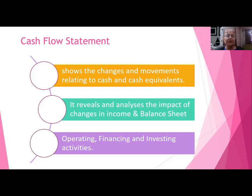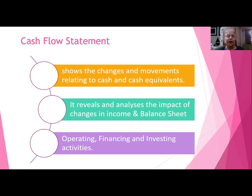There are three activities through which cash can be generated or spent. Operating activities means our routine operations — like if I am into sale and purchase of grocery, that is my operating activity. Financing activity means from where I have procured money to be invested in the business, like utilizing my own capital, paying or receiving interest. And investing activities. So our entire receipts and payments are segregated into these three parts: operations, financing, and investing.